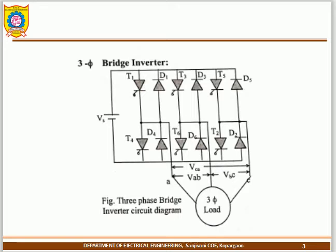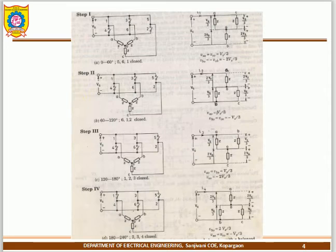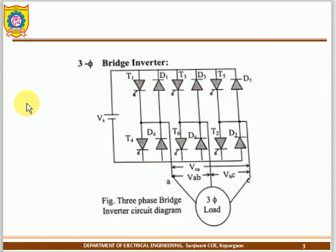Another difference: in three-phase 180-degree mode conduction, at any given time three thyristors are ON — two from the upper group and one from the lower, or vice versa, so the circuit is closed. In 120-degree mode conduction, only two switches conduct at a time — one from upper and one from lower — meaning one phase is always open.